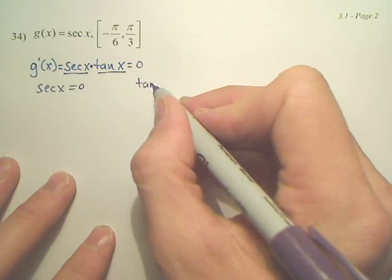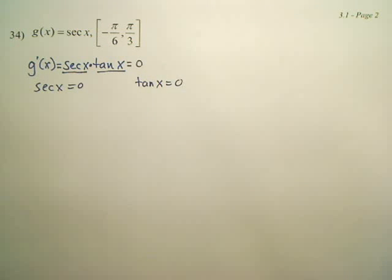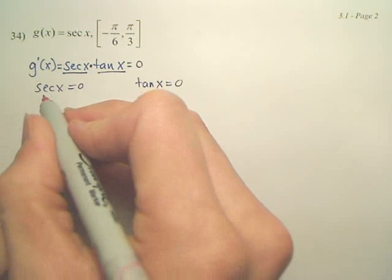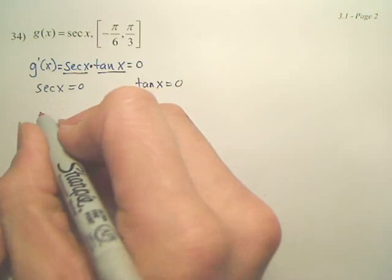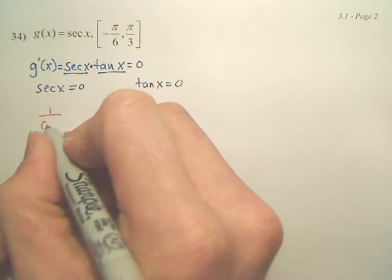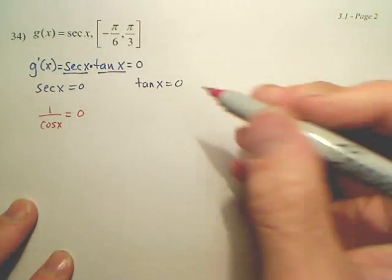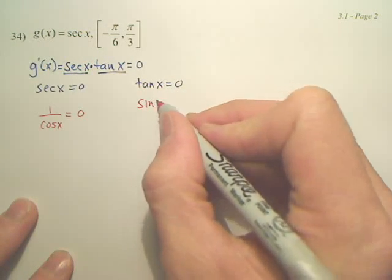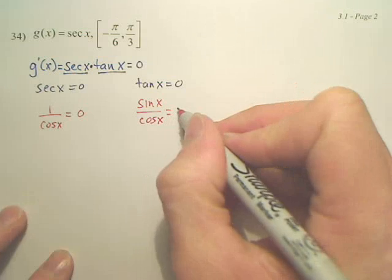So we're setting each piece equal to zero. Now, we probably don't want to look at that in those forms. It would be easier to change them to sines and cosines. This one right here looks like it's going to be one over cosine x equal to zero, and this one looks like sine x over cosine x equal to zero.